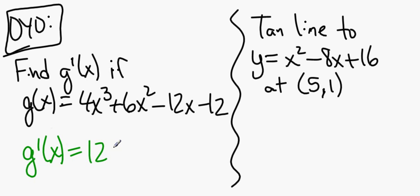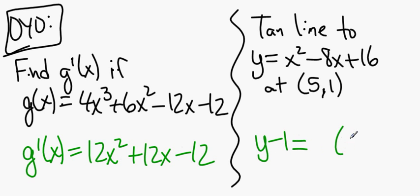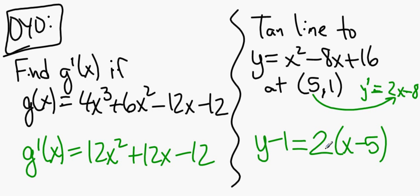g'(x) is 12x² + 12x - 12. That doesn't simplify, friends. That's as good as it gets. And then over here, we know it's y - 1 = something times (x - 5). What's that something? Well, the derivative y' is 2x - 8. We evaluate that at x equals 5, and we get a slope of 2.